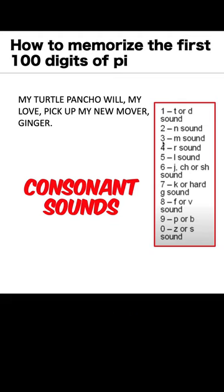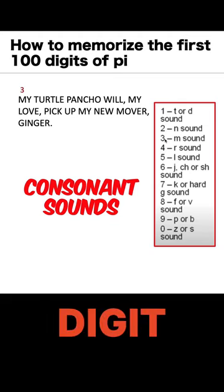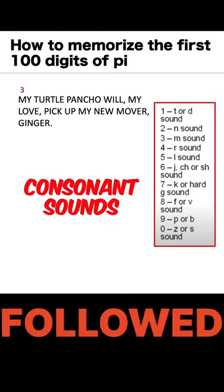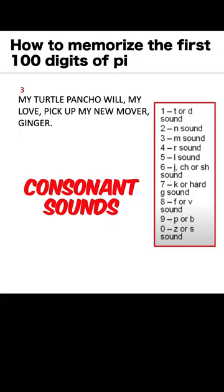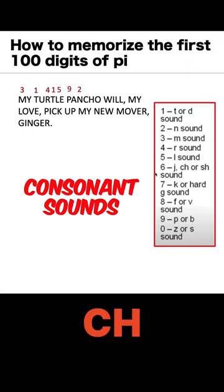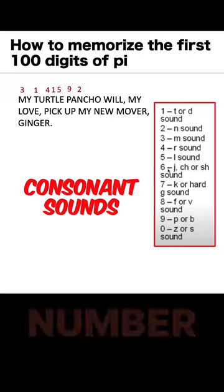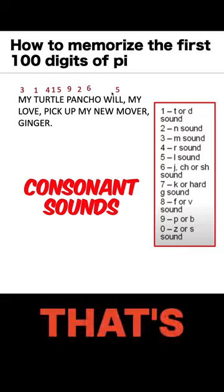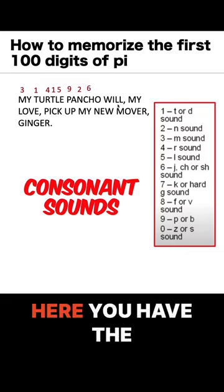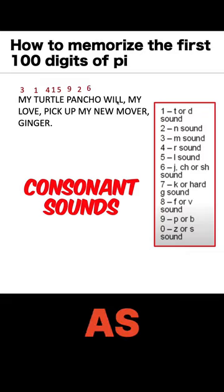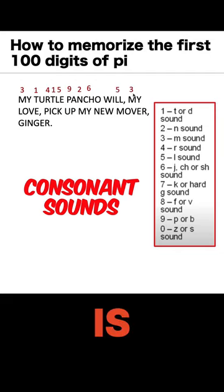M is, of course, 3, so that's the first digit of Pi, followed by the decimal point, and T is 1, this R is 4, this T is 1 again, this L is 5, this P is 9, N is 2, CH is number 6. 'Will' — that's L, here you have the L sound, but this is only counted as 1 L sound, so this is 5. M is 3,